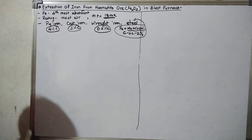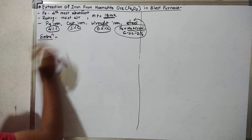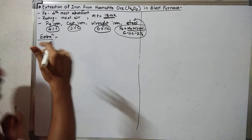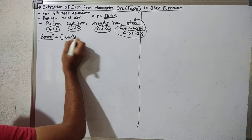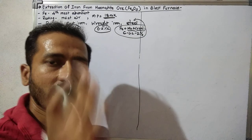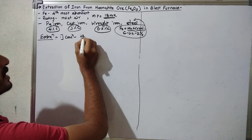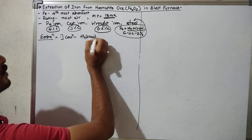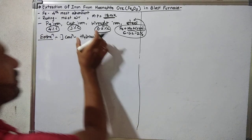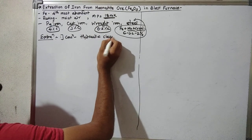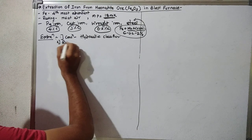Now let's discuss how to get iron from hematite ore. In the extraction of iron, there are four steps. First is concentration. The hematite ore is first made into fine powder, then concentration is done. In the concentration, which method is used? Here we have to use the hydraulic classifier method for concentration. Then the second step is roasting.